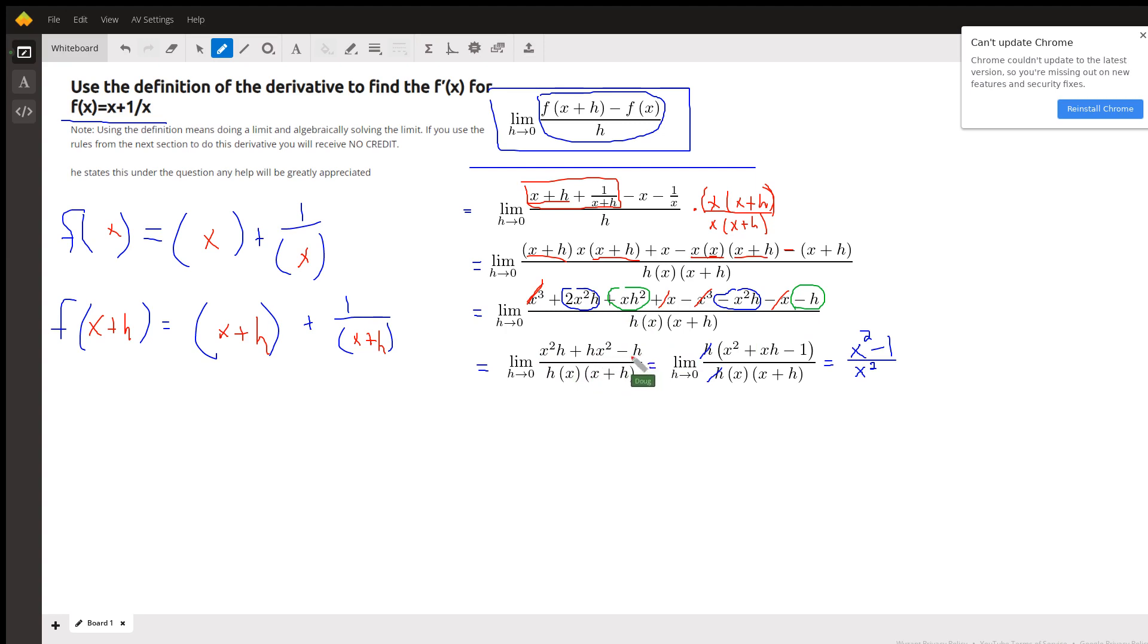So there's what the numerator simplifies to. And of course this denominator was always h times this LCD x times x plus h. And the whole key is if you've done this correctly, h will always factor out from the terms that remain in the numerator. And here I factored out that h. And then as h approaches 0 but doesn't ever equal 0, those h's cancel out. And I can finally take the limit as h approaches 0 by direct substitution of 0 in for h.